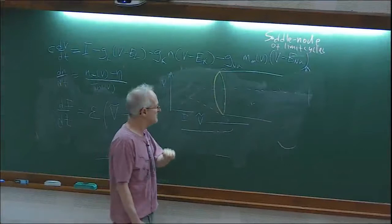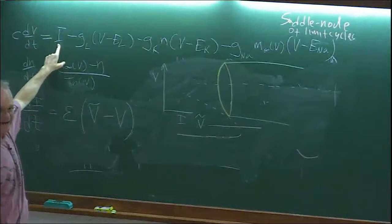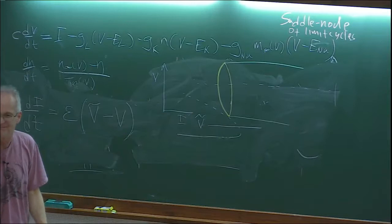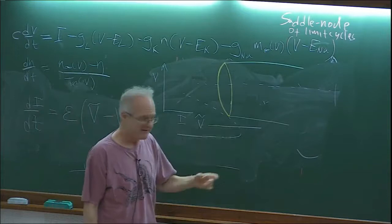I've got to allow the current to vary slowly. I is now a dynamic variable instead of fixed. And I've laid it right here — V tilde.